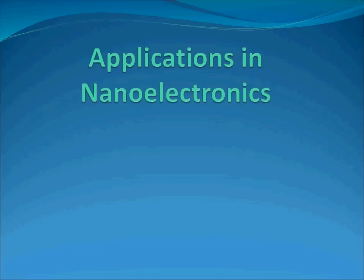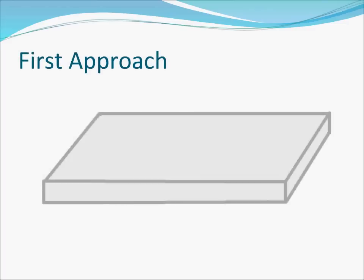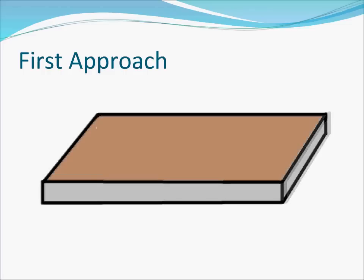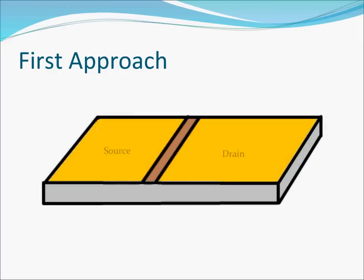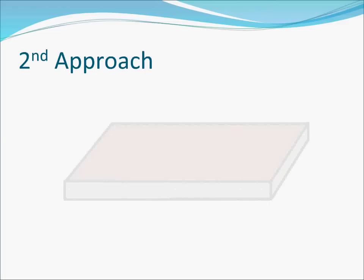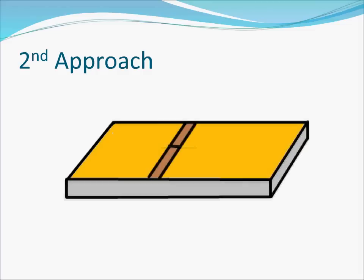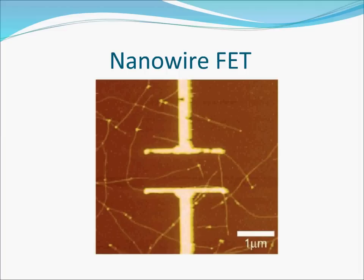Now let us look into the applications of these PTCDI nanostructures in electronics. In the first approach, a silicon wafer is taken, which acts as a gate. Silicon dioxide is then grown over this wafer to form a dielectric layer. Gold or platinum is then deposited by lithography to form the source and the drain. Nanowires are then drop-casted to form a channel between the source and the drain. In the second approach, the nanowires are drop-cast on the silicon dioxide layer and then gold or platinum is patterned over it by lithography. This is an image of a nanowire deposited between a source and drain fabricated by lithography.